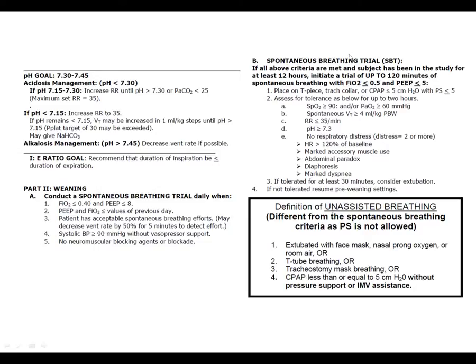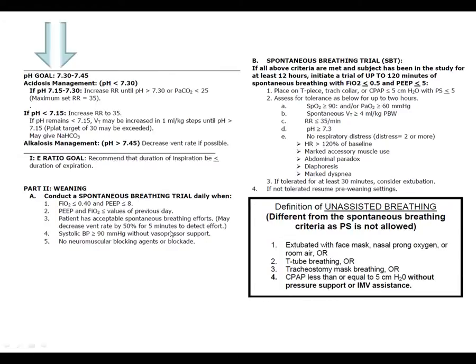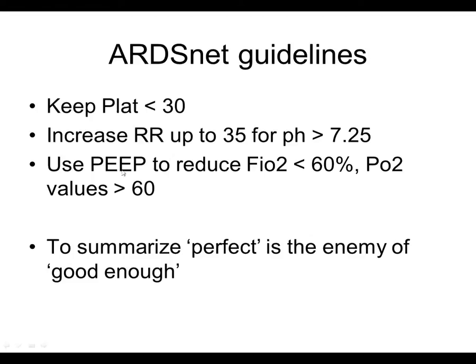The rest of the protocol covers spontaneous breathing trials, which we do every day for patients on FiO2 no greater than 45% and PEEP no greater than 8 cmH2O. Others are evaluated for weaning trials. To summarize ARDSnet: keep plateau pressure less than 30, avoid over-distention of good lung tissue, target pH of 7.25, respiratory rate up to 35, and set PEEP appropriately to reduce FiO2 to 60% or less. We allow for higher levels of hypoxia. As Dr. Norcross says, perfect is the enemy of good enough — these are not perfect lungs, and we cannot expect perfection.